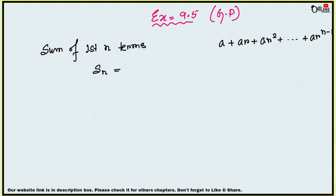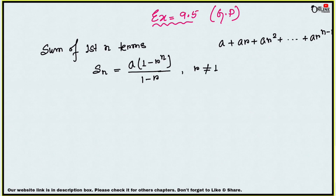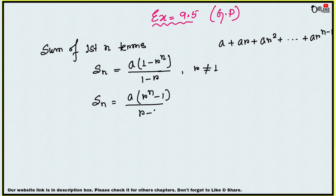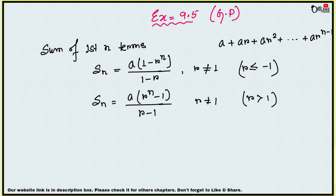If you want to find the sum of the first n terms, we denote this as Sn. The formula is: Sn = a(1 − rⁿ) / (1 − r), where r ≠ 1, because if r = 1 the denominator becomes 0. You can also write this formula as: Sn = a(rⁿ − 1) / (r − 1). When r ≤ −1 or |r| < 1, apply the first formula; when r > 1, apply the second.